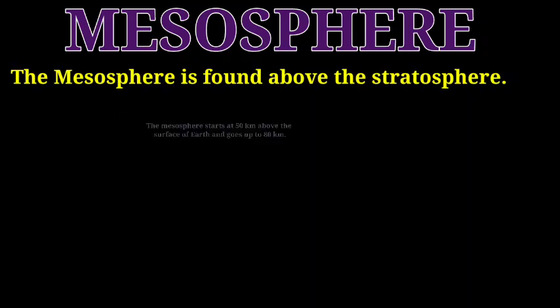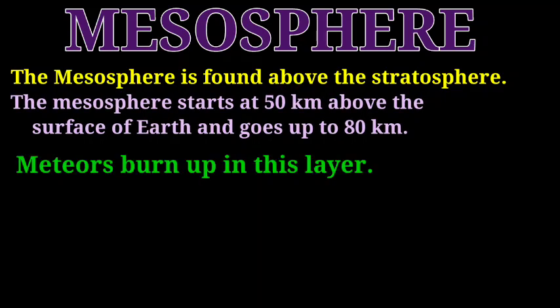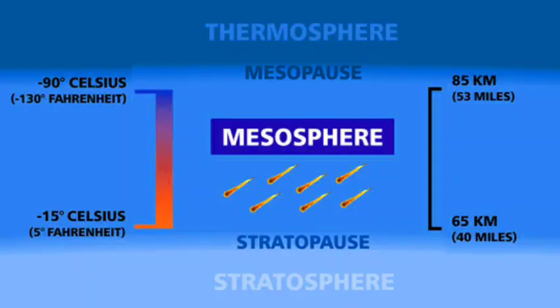Now we will talk about the mesosphere. The mesosphere is found above the stratosphere. It starts at 50 kilometers above the surface of the Earth and goes up to 80 kilometers. Meteoroids burn in this layer only — in the night time you may have seen a burning, moving star; that is actually a burning meteoroid, and it happens only in this layer. In the figure you can see the mesosphere and burning meteoroids, at a distance of about 65 to 85 kilometers, just above the stratosphere.